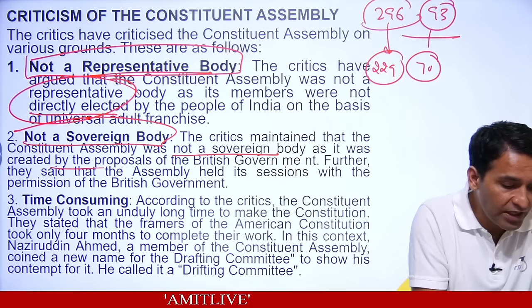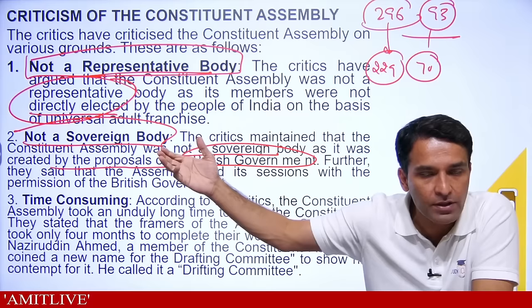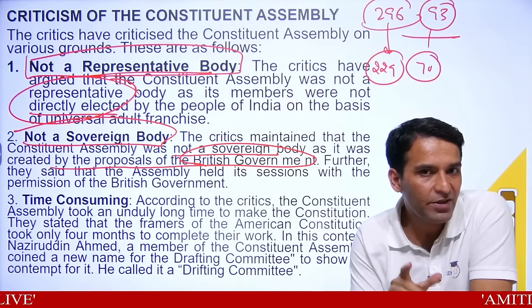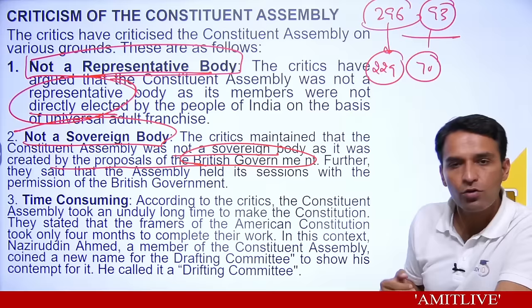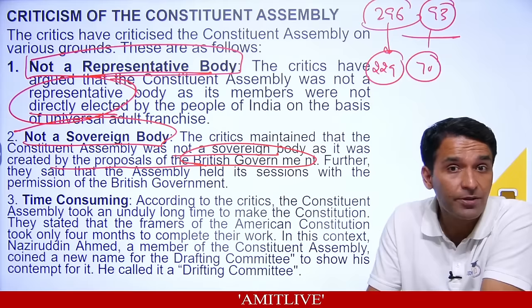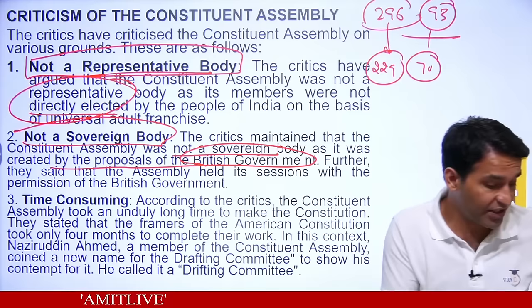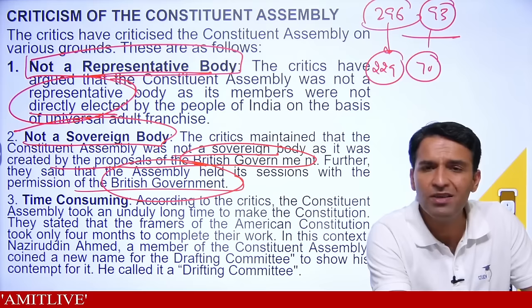For something to be sovereign, there must be zero external influence. But our Constituent Assembly was created by the British proposal — so did the British decision influence our constitution? The Constituent Assembly held its initial sessions from 1946 to 15th August 1947 with the permission of the British government. The Objectives Resolution was chosen when the British government was still paramount over India — and therefore over the Constituent Assembly also.